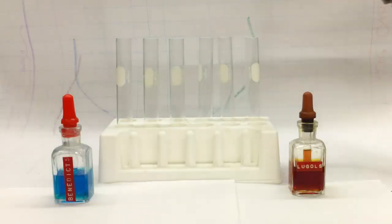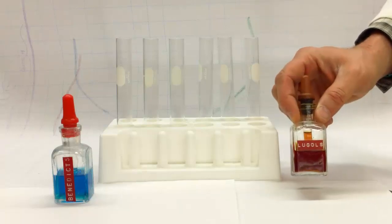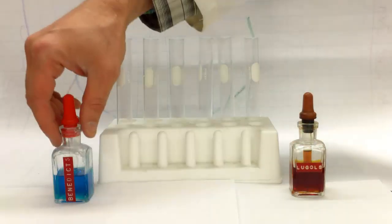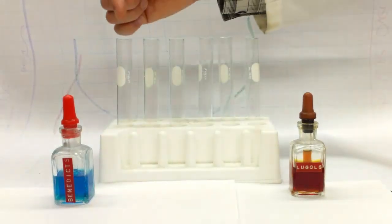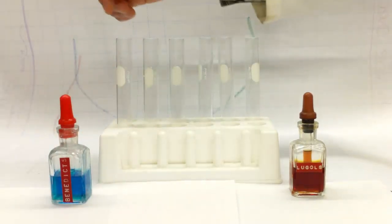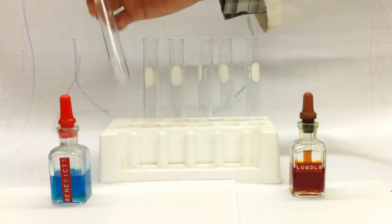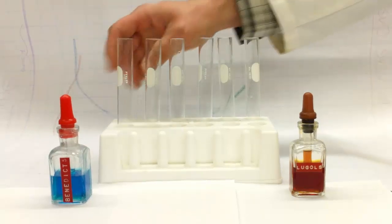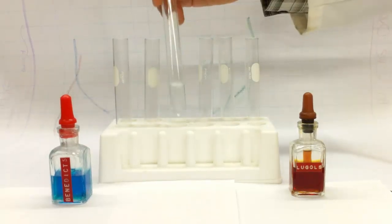In this part of the lab, we're going to work with the starch indicator, which is iodine, and the glucose indicator, which is Benedict's solution. We're going to use the glucose indicator first to see what happens when you put it in distilled water, starch solution, and glucose solution.